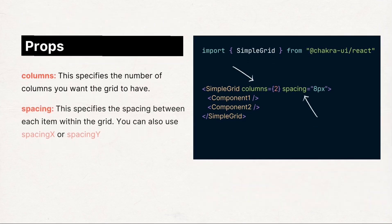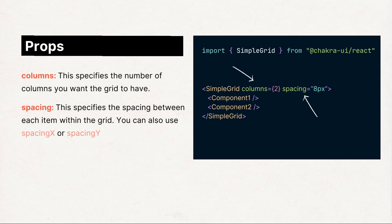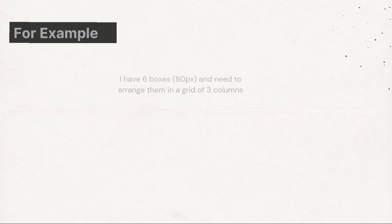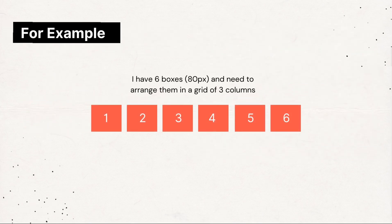Simple Grid accepts the following props: columns, which specifies the number of columns you want to have, and spacing, which is the space you want between each grid item.